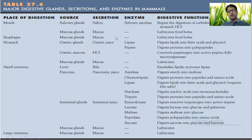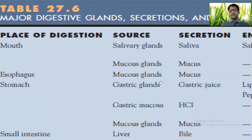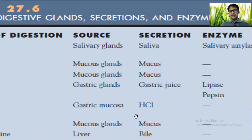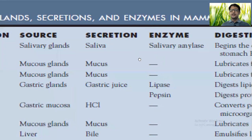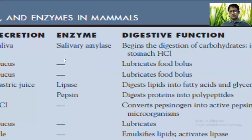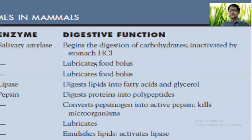Here is a list of major digestive glands, their secretions, and their digestive roles in mammals. The mouth has salivary glands, which produce saliva, produced by three pairs of glands: parotid, submandibular, and submaxillary glands. Salivary amylase is the major enzyme, which begins the digestion of carbohydrates. Salivary amylase gets inactivated by stomach HCl.